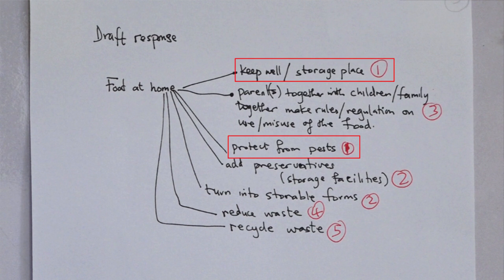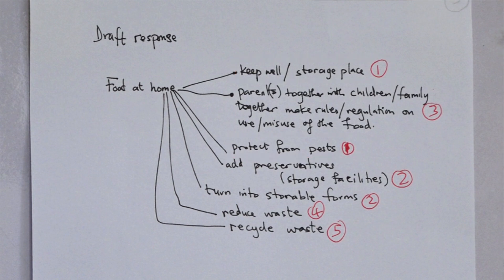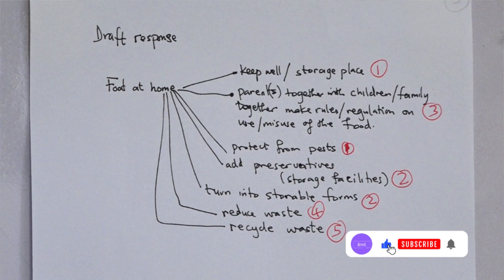For example, 'keep well' and 'storage place' and 'protect from pests' are the same idea and go together in one paragraph. Then a second paragraph on adding preservatives and storing well, a third on regulations on how to use the resource, a fourth on how to reduce waste, and a fifth on how to recycle waste. If you don't plan drafts first, you may keep repeating the same point and miss many marks.